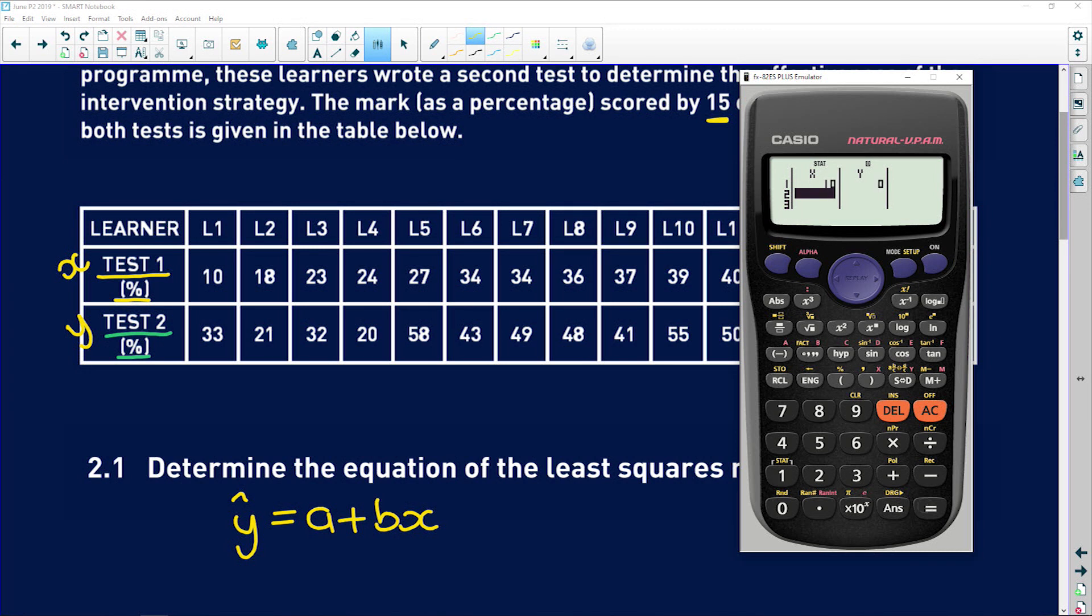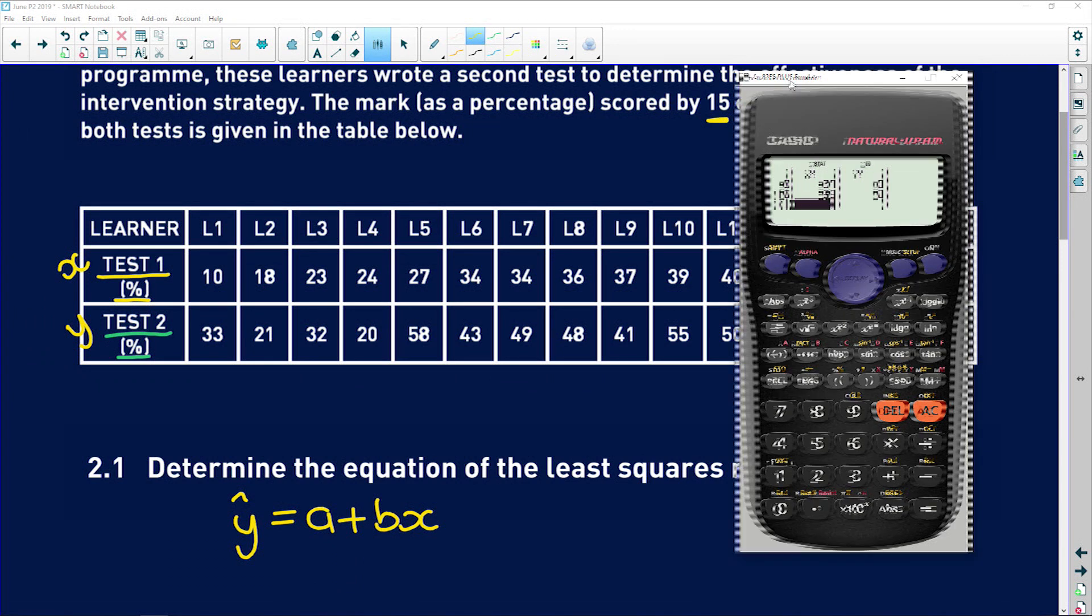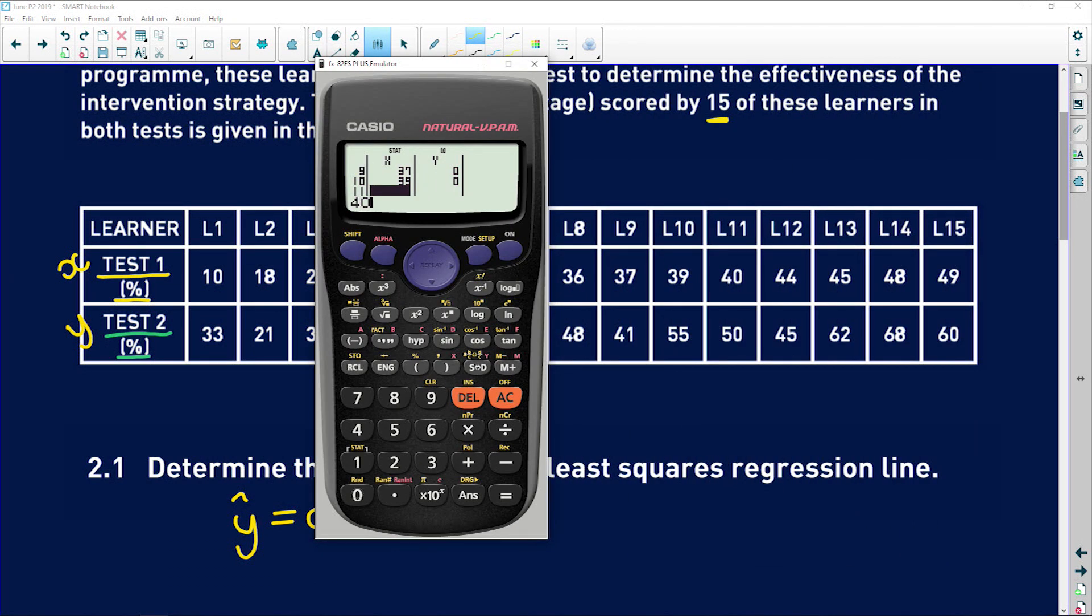And you follow each mark by an equals. So we'll say 10 equals, and you see it goes to the next row, and you carry on adding or entering the marks. So 18 equals 23 equals 24 equals, and just make sure you are entering the right marks. Because if you don't, it really could mess with all of your data points. And I know that this is time consuming guys, but it will make your lives so much easier.